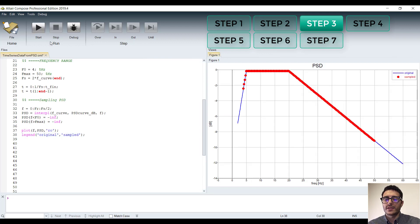The red dots represent the sampled PSD that we will use to generate our time series data. And let's do that.